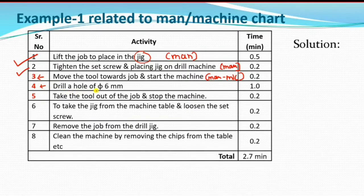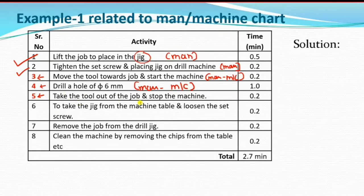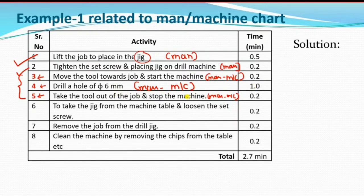The fourth operation is to drill a hole of 6 mm diameter, where both the worker and machine are working together. The fifth operation is to take the tool out of the job and stop the machine — the machine works for about 1 minute during the drilling. The sixth operation is to take the jig from the machine table and loosen the set screw, which is the man's role while the machine is stopped.